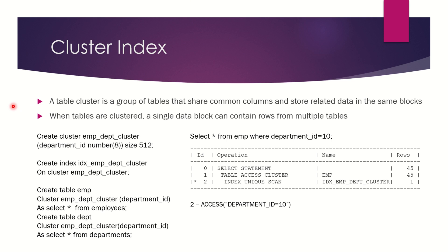The next type of index we are going to cover is the cluster index. Imagine a scenario where you have two or more tables and all of these tables share a common column. Instead of creating a separate index on each column, you can create one cluster index which will be applicable to all the tables for that shared column. That is how you can visualize a cluster index — one index applicable to all shared columns of the tables.